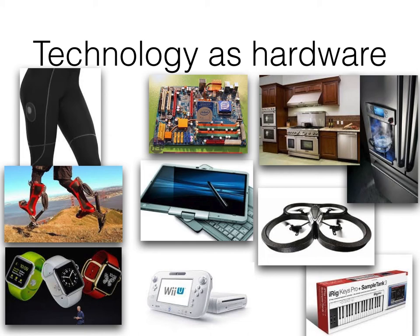Other technologies visible there are wearables — for example, the Apple Watch, Fitbit or Garmin bands, which allow you to monitor the number of steps you take and the calories you consume. There are also things like prosthetic legs, for example. They're all part of technology as hardware. Toys and other gadgets such as Wii units, drones, and a peripheral keyboard that you can attach to a computer are also shown.